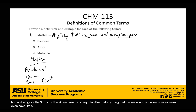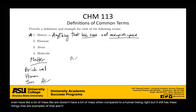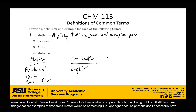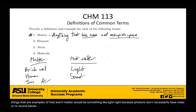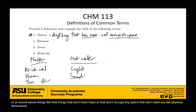It doesn't even have to have a lot of mass. Air doesn't have a lot of mass when compared to a human being, but it still has mass. Things that aren't matter would be something like light, because photons don't necessarily have mass, or sound waves — things that don't have mass or don't occupy any space, that don't have any physical dimensions to them. So that's matter.